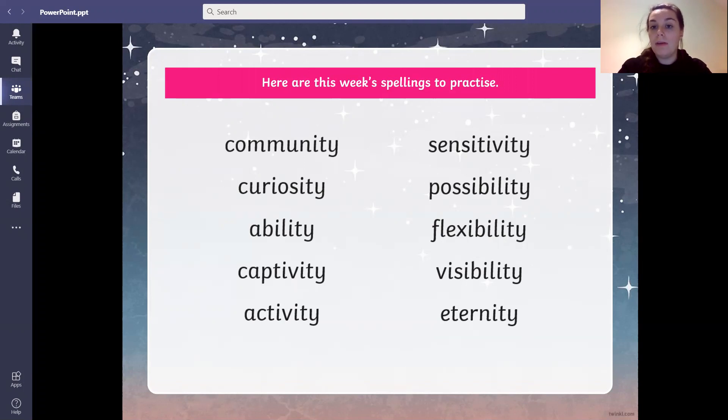Sensitivity comes from sensitive. So if you've got sensitivity, you're more aware of something, you might be more emotional. Possibility, something could happen. Flexibility can happen whenever. Visibility, how well you can see. And eternity, like something that never stops.